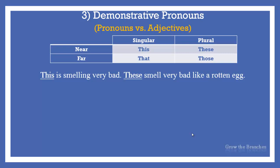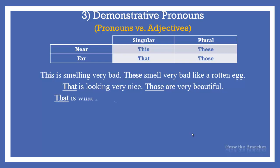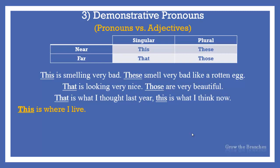This is smelling very bad. These smell very bad like a rotten egg. This and these represent a thing or some things close to the speaker. That is looking very nice. Those are very beautiful. That and those represent a thing or some things far away from the speaker. That is what I thought last year. This is what I think now. Let's practice.